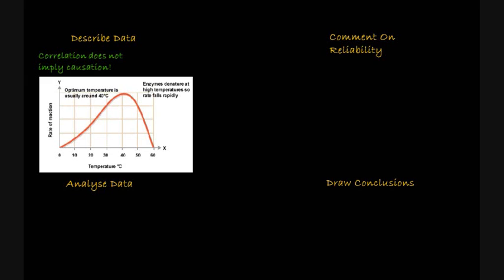To get more marks, we would add more information. We typically refer to data for this. So we could say, as temperature increases from 10 degrees to 40 degrees, the rate of reaction also increases. The rate of reaction then decreases as temperature increases from 40 degrees to 60 degrees. This would be a further four marks.